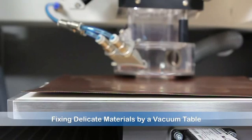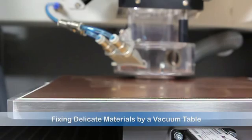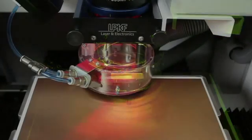Delicate materials present no problems for the U3, whose vacuum table corrects material irregularities, ensuring maximum accuracy for board creation.